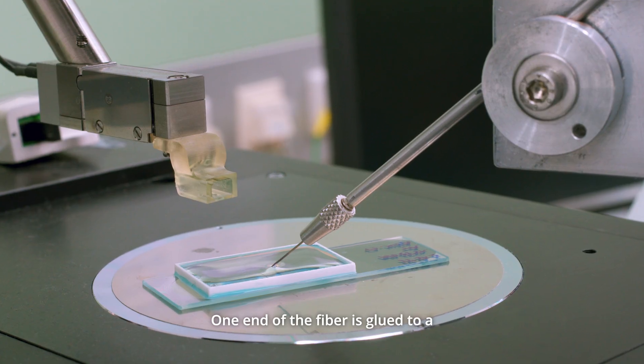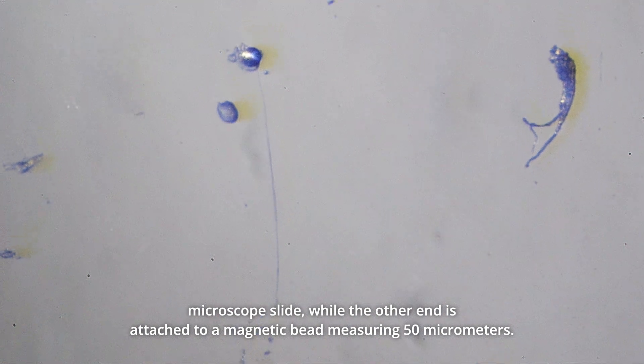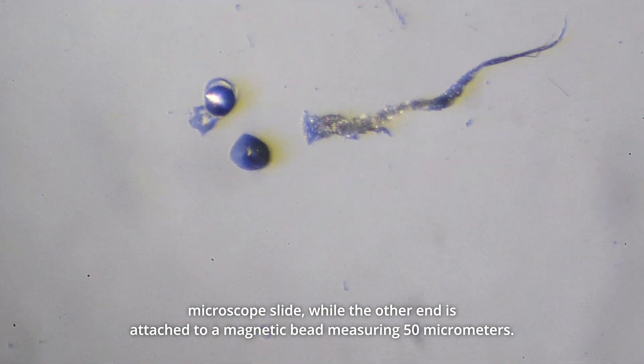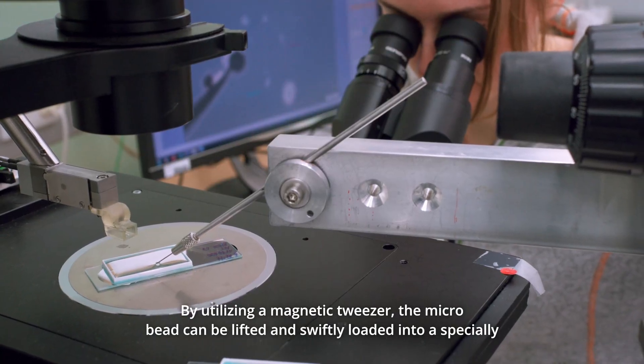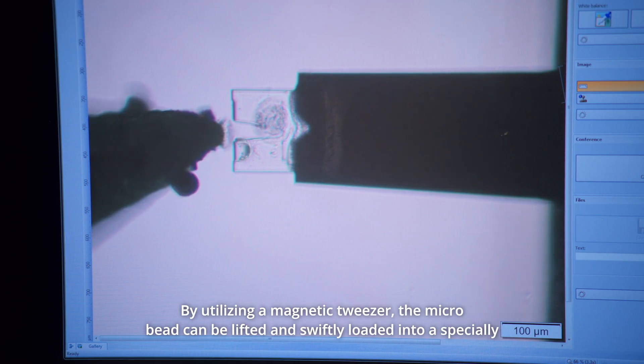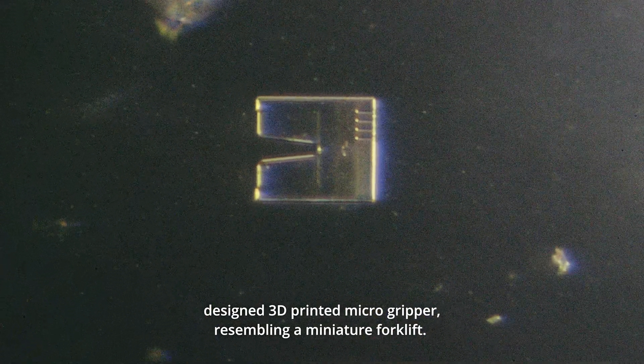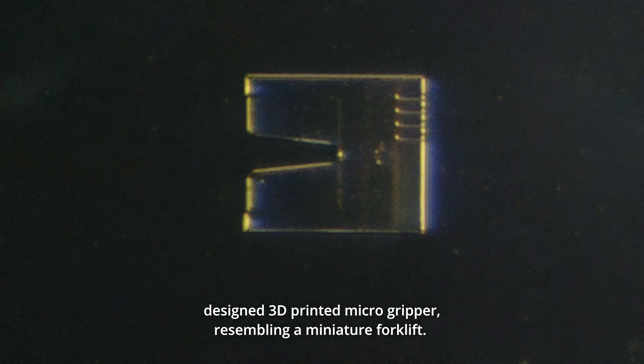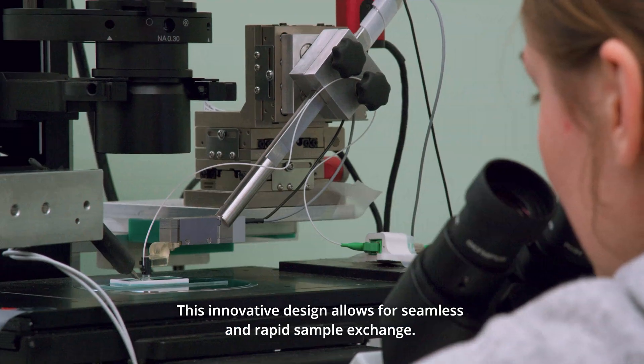One end of the fiber is glued to a microscope slide, while the other end is attached to a magnetic bead measuring 50 micrometers. By utilizing a magnetic tweezer, the micro bead can be lifted and swiftly loaded into a specially designed 3D printed micro gripper, resembling a miniature forklift. This innovative design allows for seamless and rapid sample exchange.